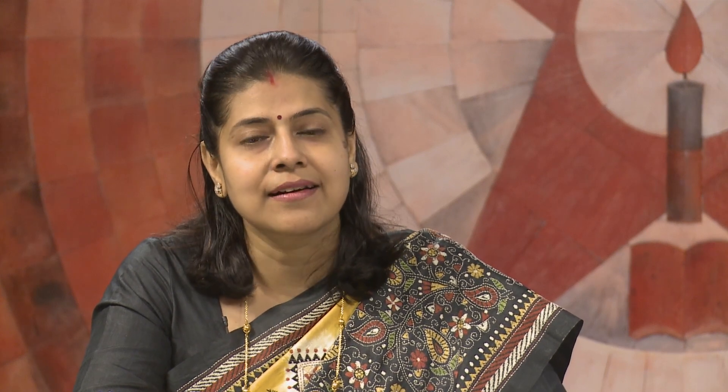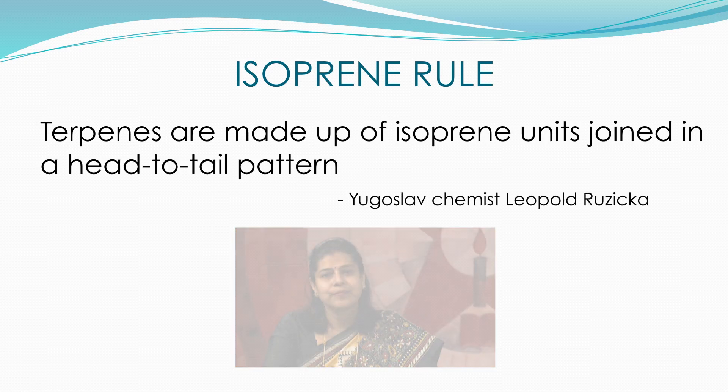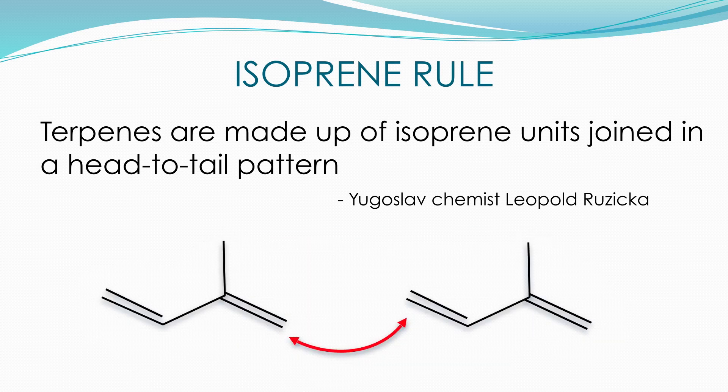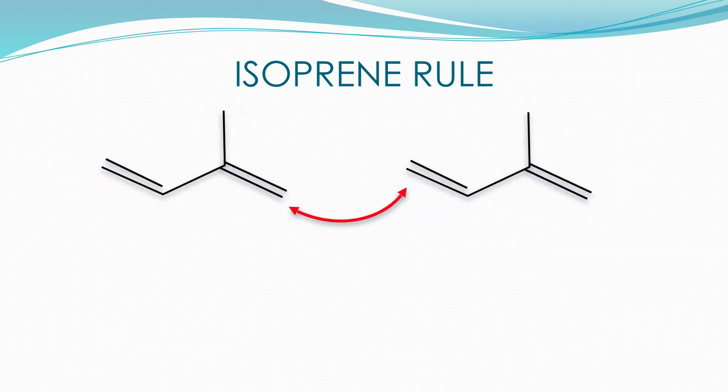We have already discussed that terpenes are made up of isoprene units. It is interesting to know that the joining of isoprene units follows a specific rule known as the isoprene rule. According to Yugoslav chemist Leopold Ruzicka, terpenes are made up of isoprene units joined in a head-to-tail fashion. The forked end of the isoprene which has the methyl group is referred to as the head, and the other end is known as the tail. Observe that the head of one isoprene unit joins with the tail of another to form a terpene.